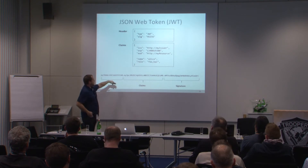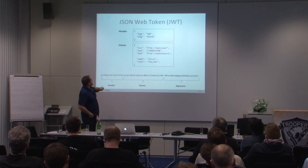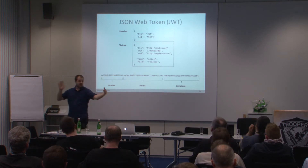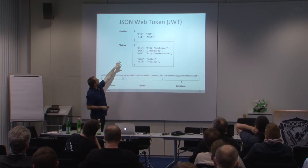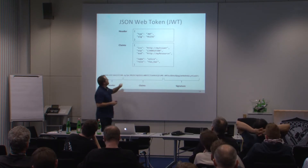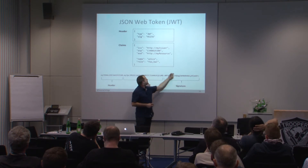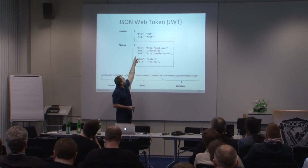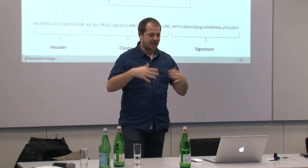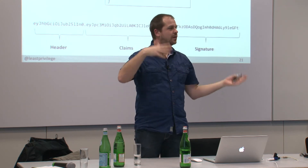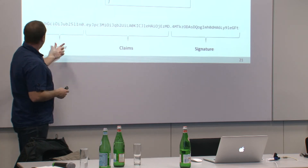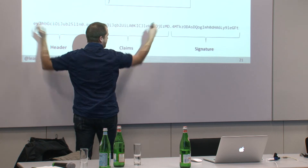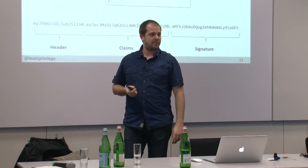JSON Web Tokens are the new token format — a JSON-encoded string easy to parse in JavaScript and other languages. The structure has a header declaring the token type and hashing algorithm, and a list of claims — reserved ones like issuer, expiration, and audience, plus freely defined ones like name and role. The format is: base64(header).base64(claims).signature.